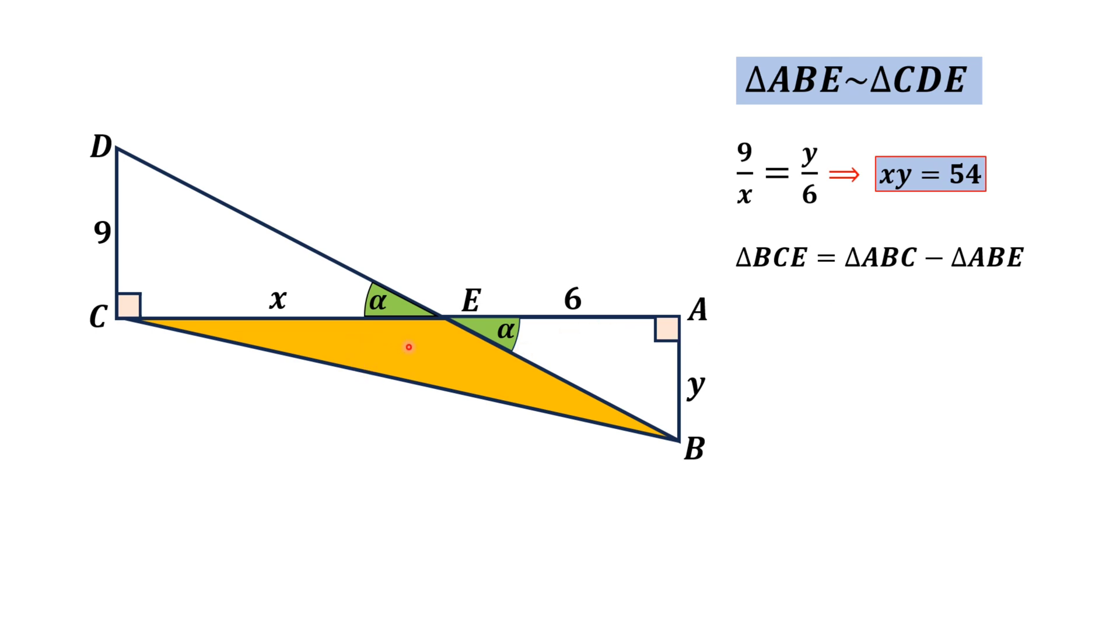Now, the area of the yellow shaded region, which is triangle BCE, equals the area of triangle ABC minus area of triangle ABE. So substituting the areas of these triangles, because these are right triangles.